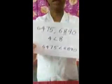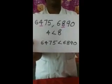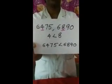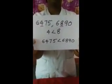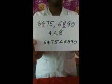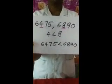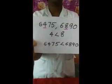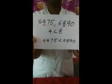Another example — how to compare two numbers with a difference in the hundreds place. See here: six thousand four hundred and seventy-five and six thousand eight hundred and ninety. In this example, the thousands place is the same in both numbers, but the hundreds place digits are four and eight. Four is always lesser than eight. So we can say that six thousand four hundred and seventy-five is lesser than six thousand eight hundred and ninety.